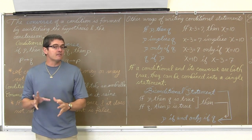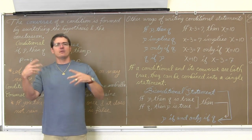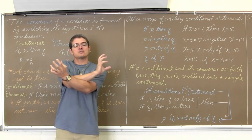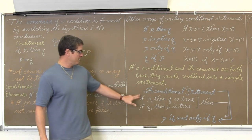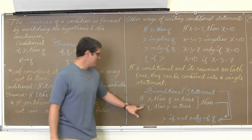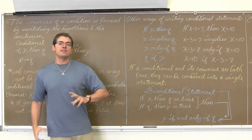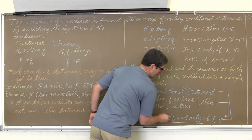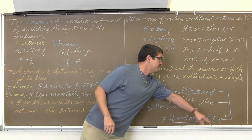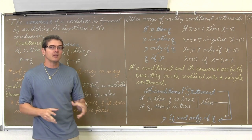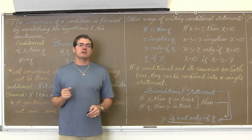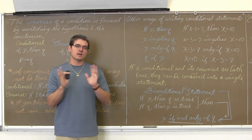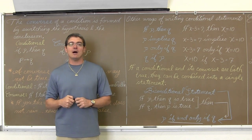If a conditional and its converse are both true — if you swap the hypothesis and the conclusion and you still get a true statement — then what you have is a biconditional statement. So if "if p then q" is true, and the converse "if q then p" is also true, then you have the ability to write a biconditional statement using "if and only if": "p if and only if q." The key thing to remember is that every definition in your mathematical textbook can be rewritten as a biconditional statement.